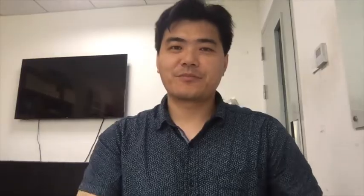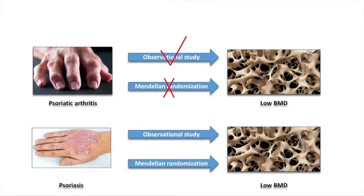Let's take a look at the results. We found that psoriatic arthritis is a risk factor for lower BMD in the observational study. But this association is not genetically determined. The Mendelian Randomization result shows that psoriatic arthritis is not a risk factor for low BMD, and the relationship between them is not causal.